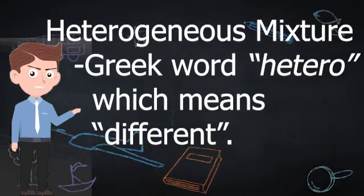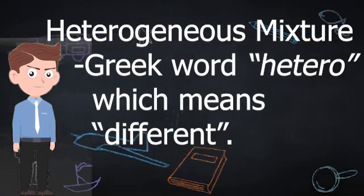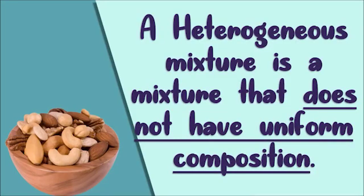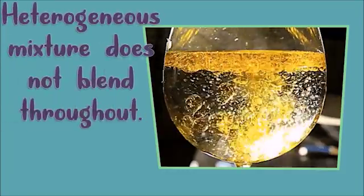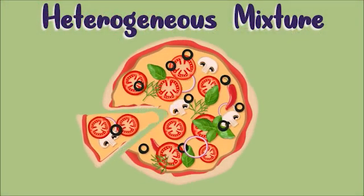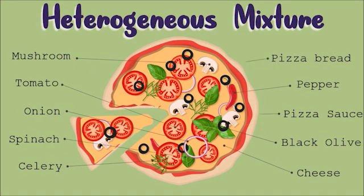Heterogeneous mixture. The word heterogeneous comes from a Greek word, hetero, which means different. A heterogeneous mixture is a mixture that does not have uniform composition and the distribution of particles is not uniform. The composition does not blend throughout. The individual substances or components are recognizable and remain distinct — the phases or substances are all visible.